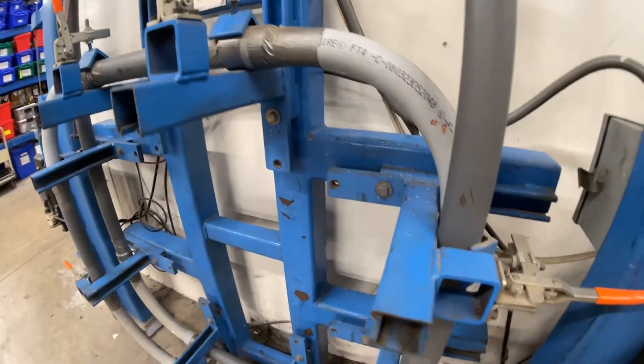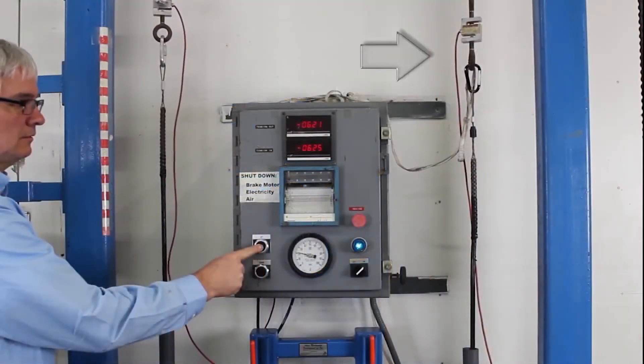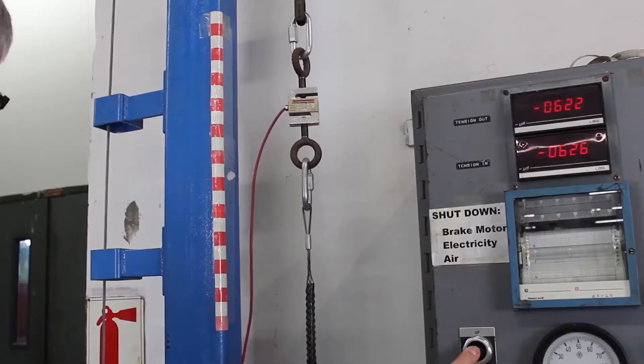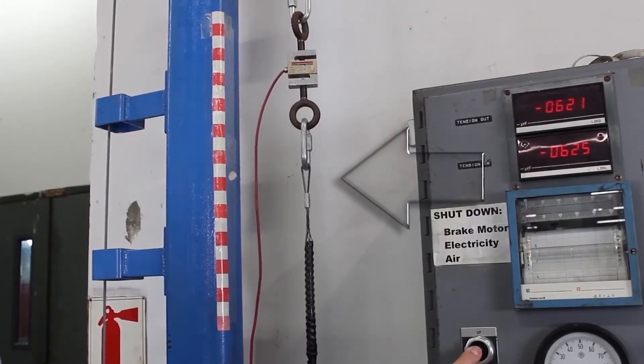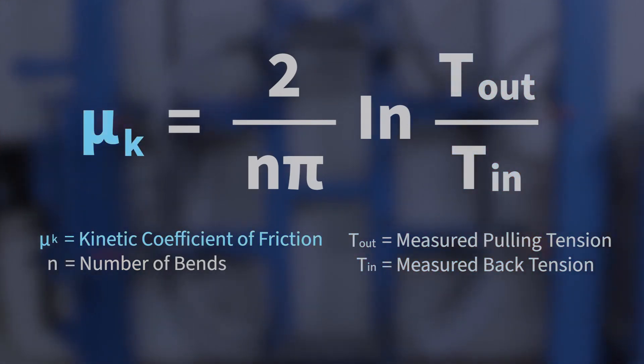Back tension is produced using a pneumatic pressure brake and is measured with a load cell. The pulling winch pulls the cable through multiple bends. Pulling tension is measured with a second load cell. Back tension and pulling tension are used to determine the friction coefficient using a standard formula.